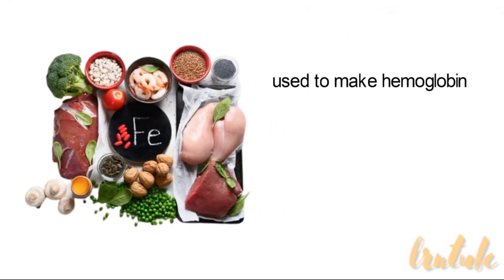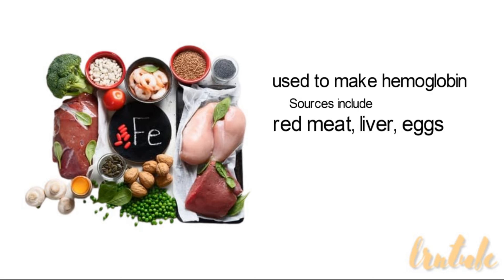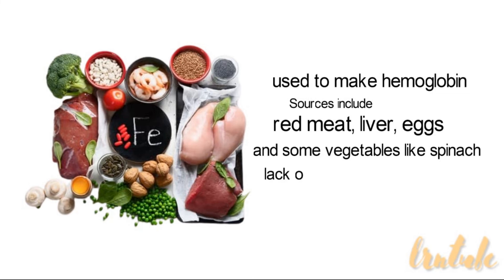Iron is used to make hemoglobin in your red blood cells so that your red blood cells can properly carry oxygen. Sources include red meat, liver, eggs, and some vegetables like spinach. If you don't get enough iron in your diet you can end up with a disease called anemia.